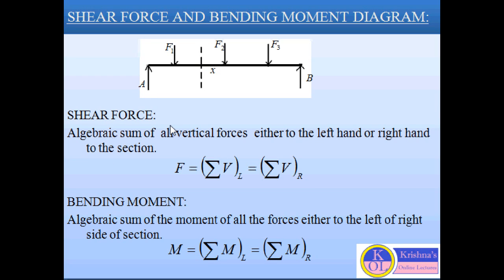So we can say the shear force will be the algebraic sum of all vertical forces either to the left hand side of the section or the right hand side of the section. Mathematically, the formula of the shear force is F equal to summation of V, which is the summation of vertical forces at the left hand section or the summation of vertical forces at the right hand section.